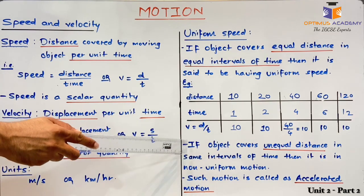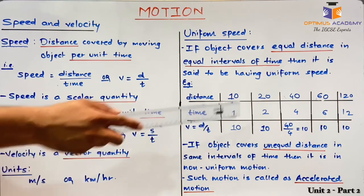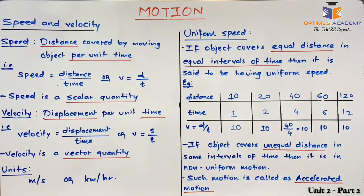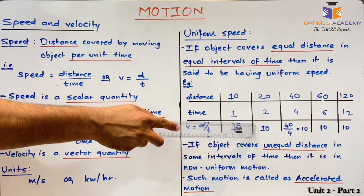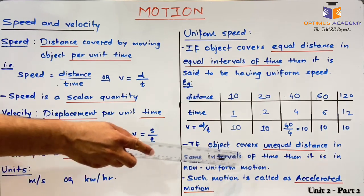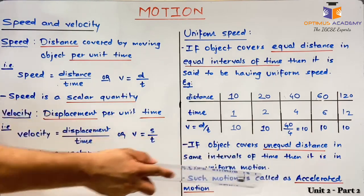When the object covers unequal distance in equal intervals of time — for example, in 1 second it covers 10 meters, in 2 seconds 20 meters, but in 4 seconds 60 meters — its speed becomes 60 divided by 4, which is 15 meters per second. So in the 1st interval it was 10, in the 2nd it was 10, and in the 3rd it becomes 15. The object is not moving with constant or uniform speed. Such motion is known as non-uniform motion. Whenever there is a change in motion — whether increasing or decreasing — the object is said to be in accelerated motion.